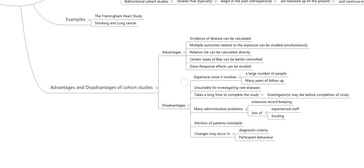The advantages and disadvantages of cohort studies are also asked as sub-questions in essay questions. The advantages are: the incidence of disease can be calculated, multiple outcomes related to the exposure can be studied simultaneously, the relative risk can be calculated directly, certain types of bias can be controlled, and dose-response effects can be studied.